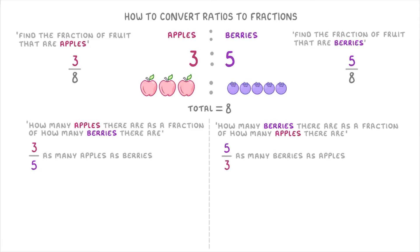This might seem a bit weird, but remember that fractions like 5 thirds just represent numbers. In this case, 5 thirds is exactly the same thing as 1.67. And so what we're really saying is that we always have 1.67 times as many berries as we have apples.